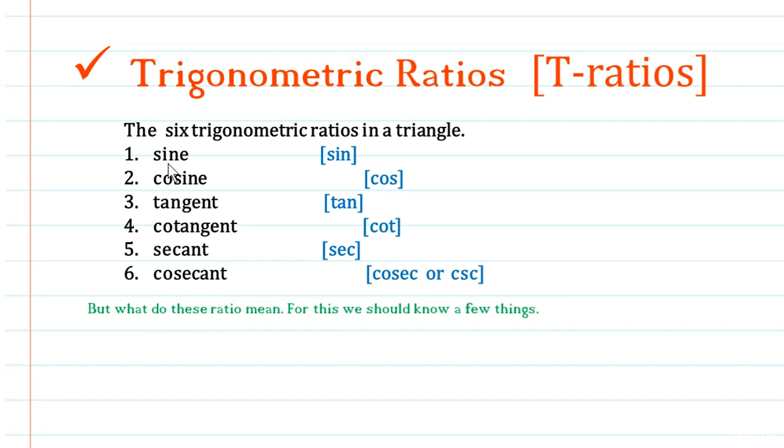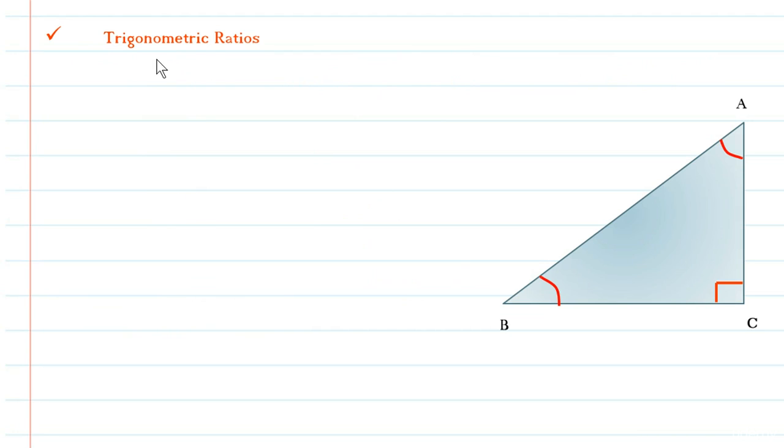So we have heard the names of six t-ratios, but what do these ratios mean? What do these ratios stand for? For this we should know a few things. To describe the t-ratios like sine, cosine, etc., which we have discussed in any triangle.